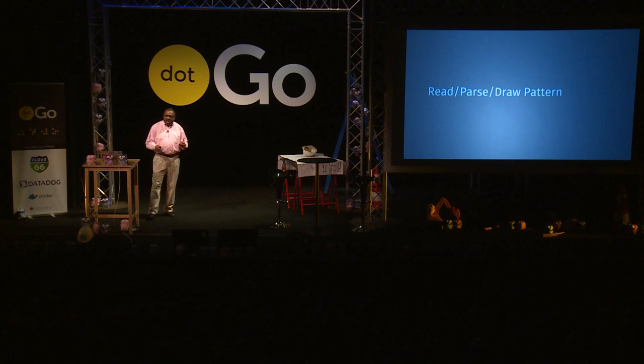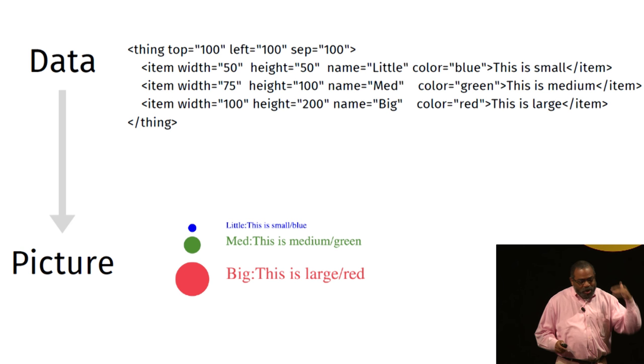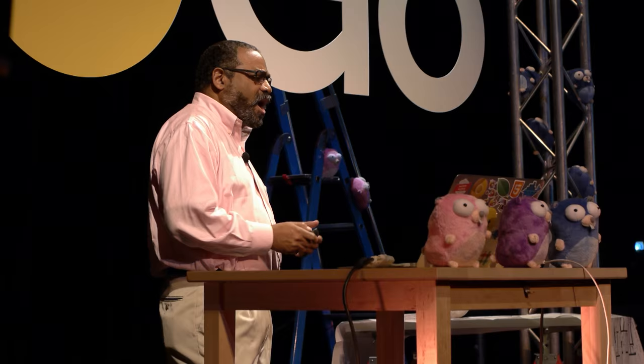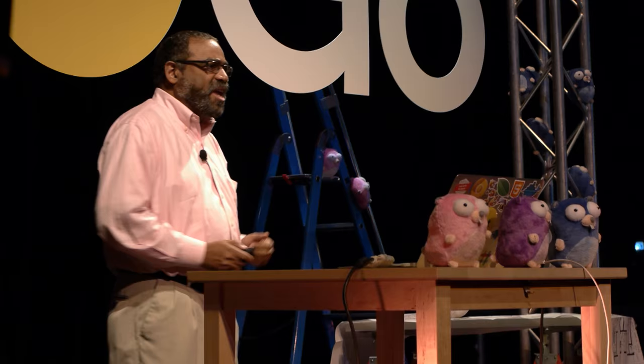I want to talk about something I discovered when creating clients for SVG Go: the read-parse-draw pattern. Go makes this wonderful. It's all about turning data into a picture. The data can come from anywhere — your files, the network, somebody's API — but you need to visualize things. Starting from data structures described in structs, because you've got things like the encoding package, you can turn those structs into objects in memory, then draw them. Start from the data, decode it, and make your picture.